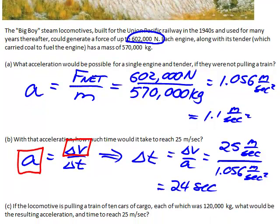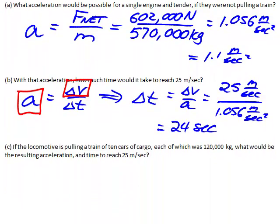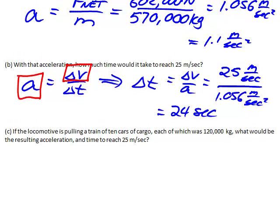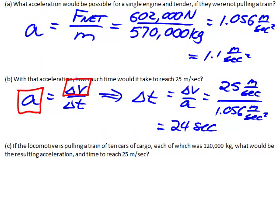And we have one last question here, which is: if in fact there were a train of cars behind the locomotive, what would be the resulting acceleration? We're going to use Newton's second law again, just like we did for part a.